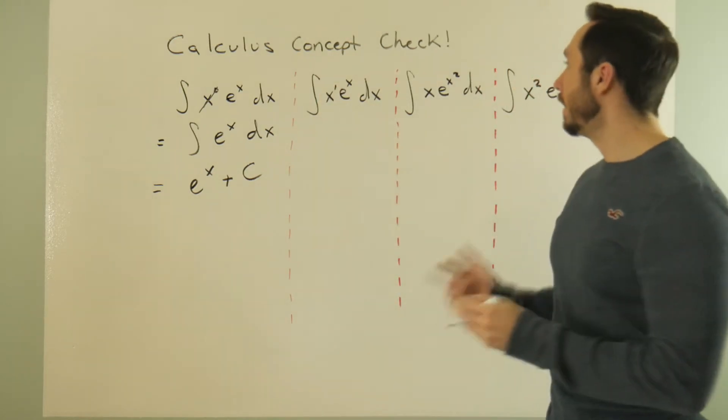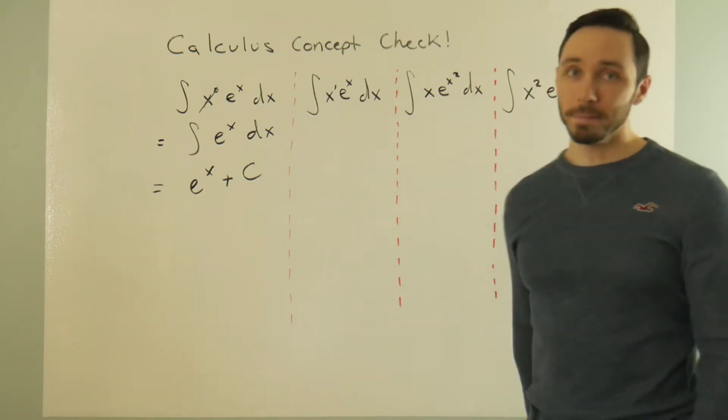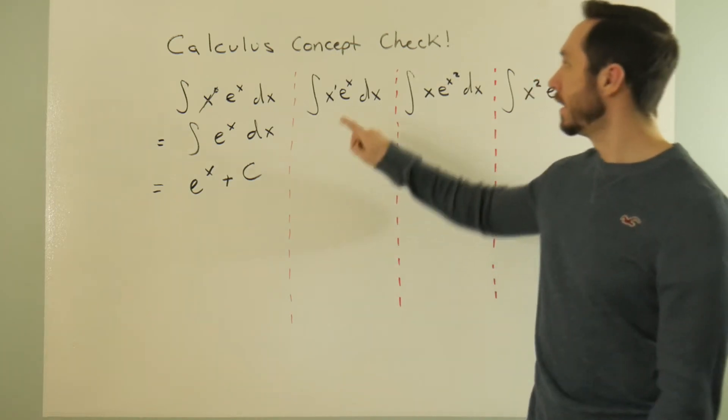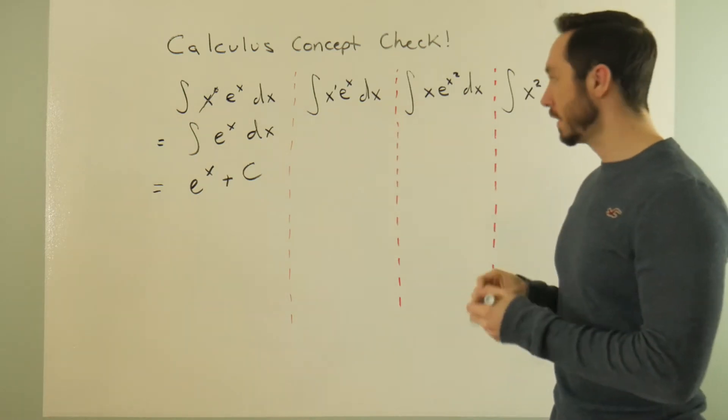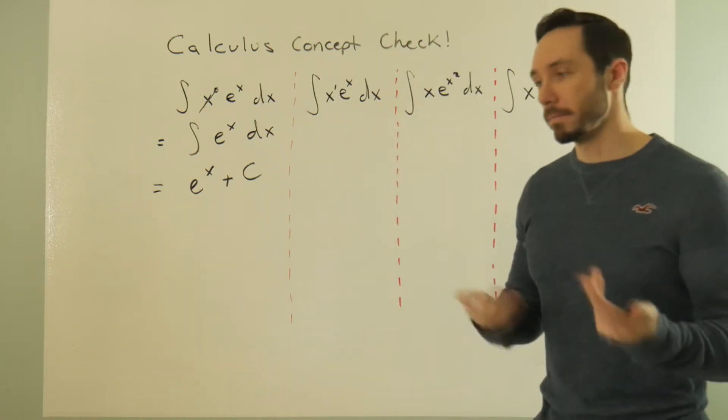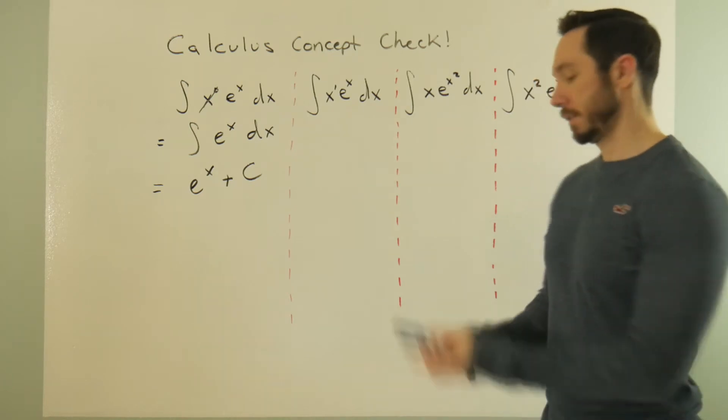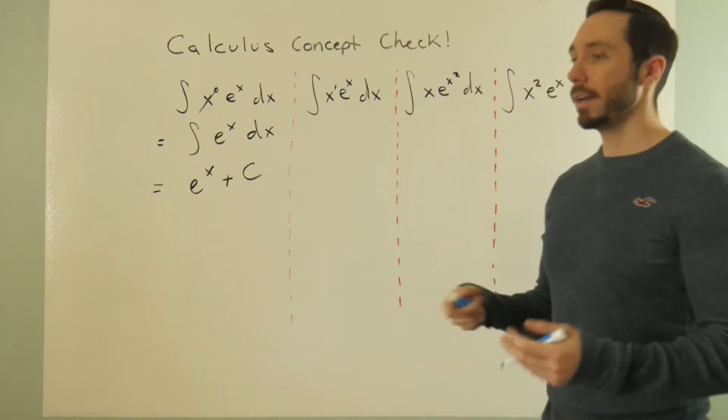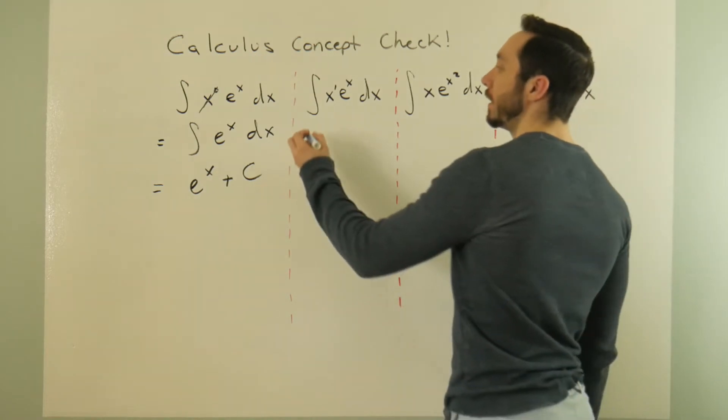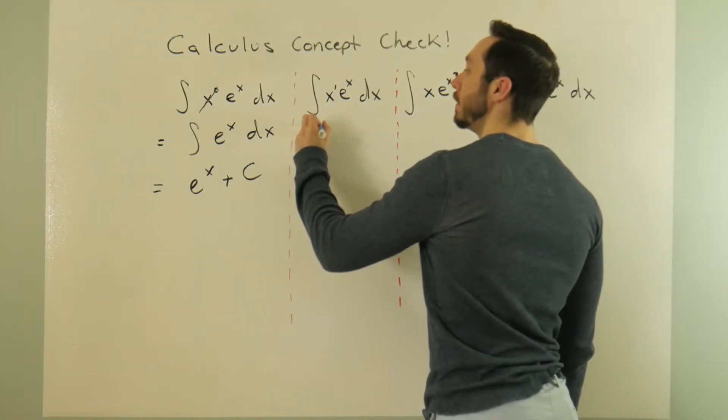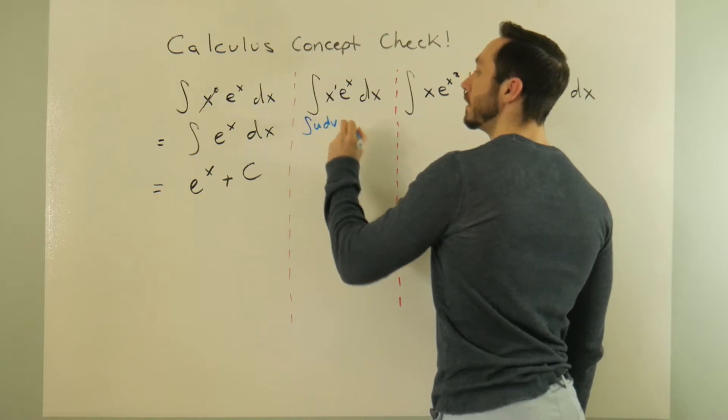Next one - it's the same thing, but what if I slap a power of one here? All of a sudden this is pretty complicated. It's a BC topic in the AP world. This requires what's known as integration by parts. If you don't know integration by parts, maybe you're a little out of water on this one. The idea behind it is like an anti-product rule of sorts, but for integrals.